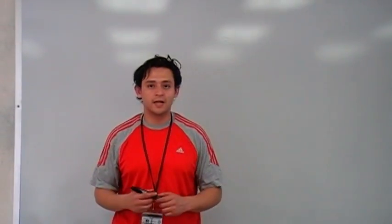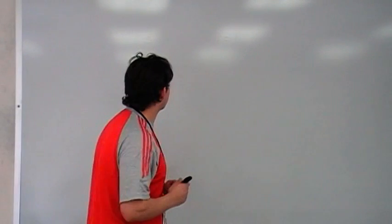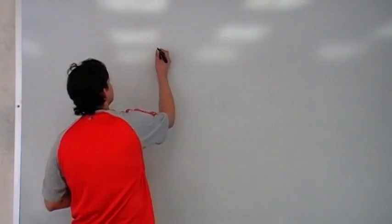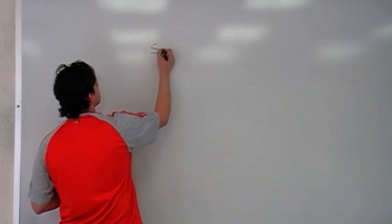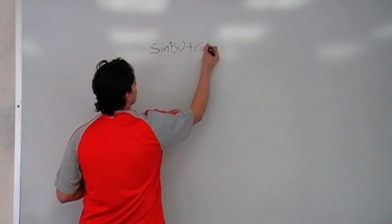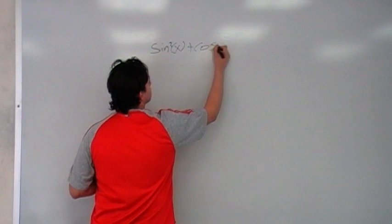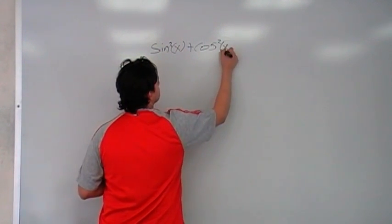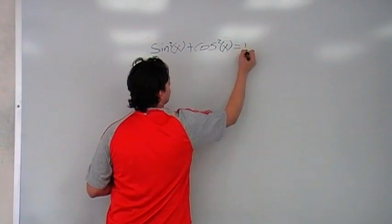Like I said last time, we're going to be using this trigonometric identity again. The sine squared of x plus the cosine squared of x equals 1.